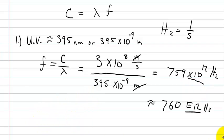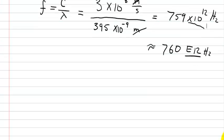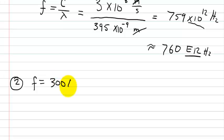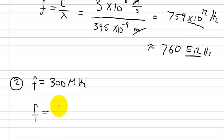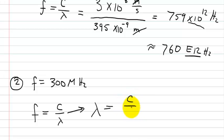Now for problem number two — let's say we know the frequency of some electromagnetic radiation is 300 megahertz, and we want to know what the wavelength is. To solve for the wavelength, we use the same formula: frequency equals speed of light divided by lambda. We manipulate it so that the wavelength is equal to the speed of light divided by the frequency.